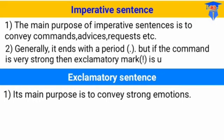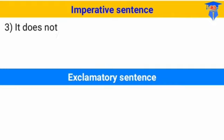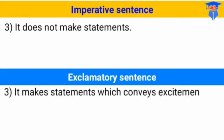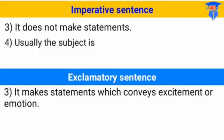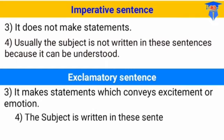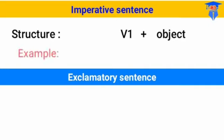For punctuation: imperative sentences use a full stop and can also use an exclamation mark. But exclamatory sentences always end with an exclamation mark. Exclamatory sentences make a statement which conveys excitement or emotion — menyampaikan pernyataan yang menyatakan ke-excited-an atau emosi kita. Kalimat perintah tidak disebutkan orangnya, tapi kalau exclamatory sentence, disebutkan orangnya.